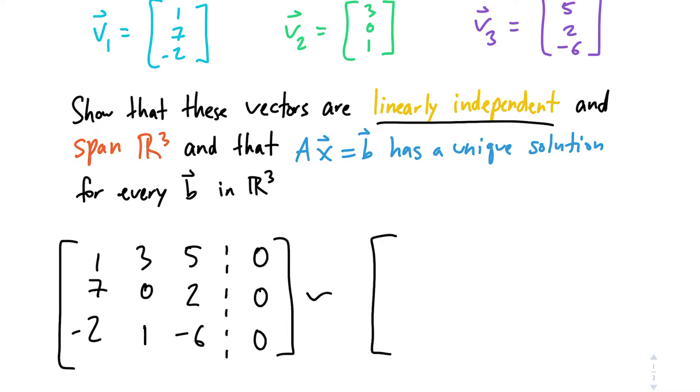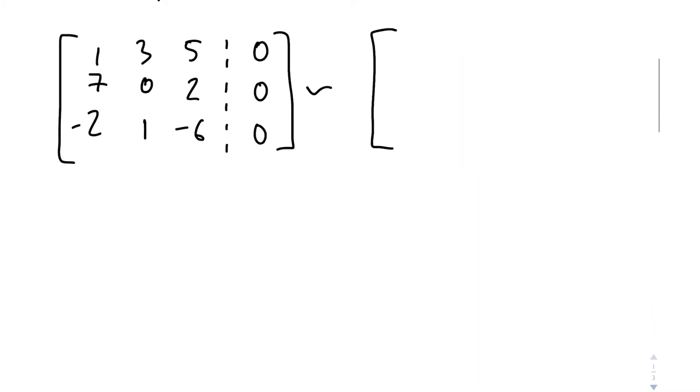So let's do some row operations. So I see that one. Let's multiply it by negative 7 so we can cancel out that 7 there. So negative 7, 0. We're multiplying row 1 by negative 7. So negative 7, negative 21, negative 35, and then 0. So we would describe this as row 2 minus 7 row 1, and that goes back into row 2. So we have 1, 3, 5. We're not changing the first row, but we are changing the second row. So 7 plus negative 7 is 0. 0 plus negative 21 is negative 21. 2 plus negative 35 is negative 33, 0.